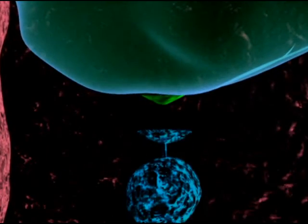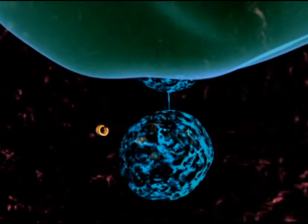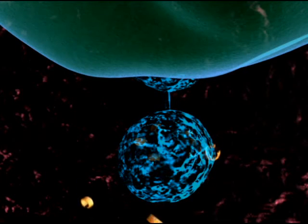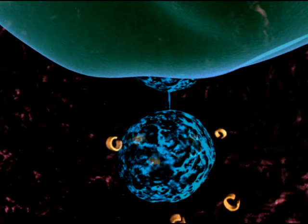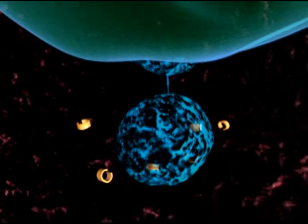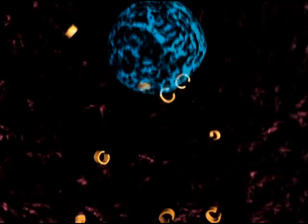T cells that come in contact with macrophages or dendritic cells become active and the T cells then send out signals called cytokines. These cytokines are absorbed by B cells, activating them in turn.